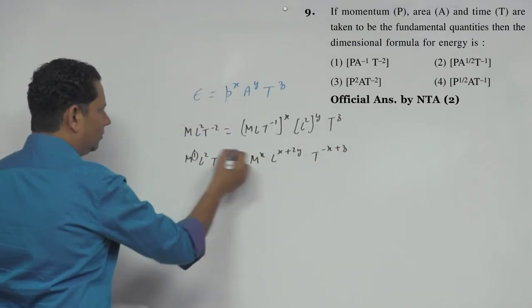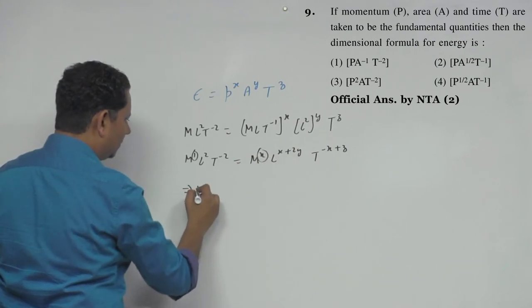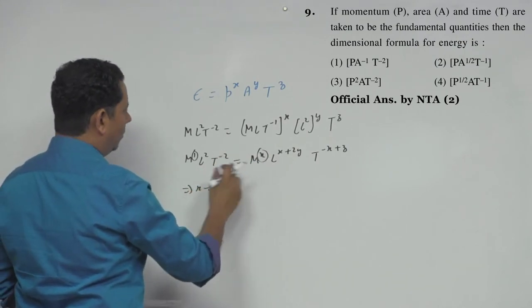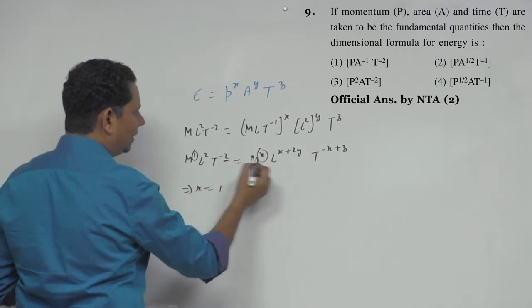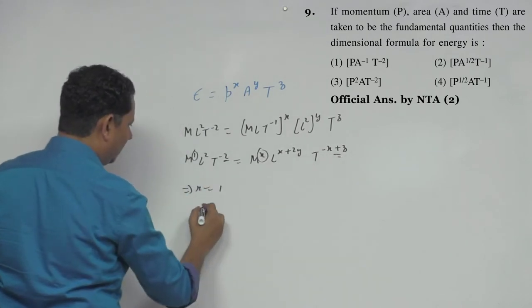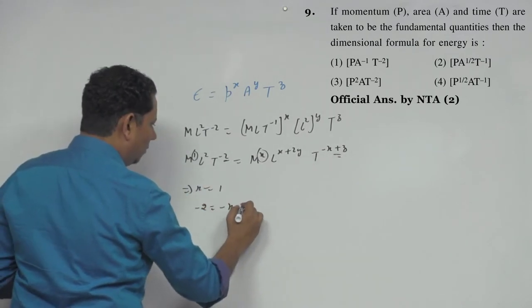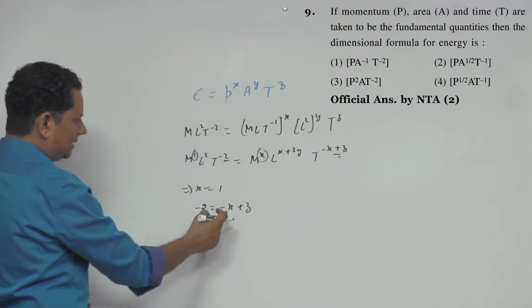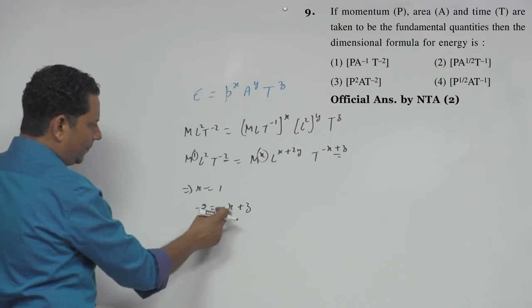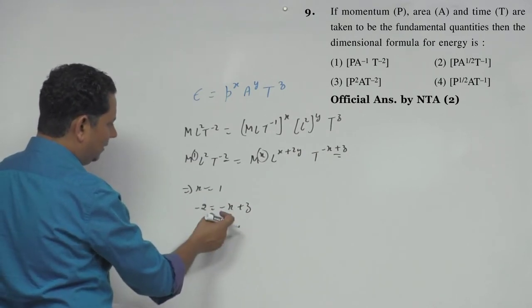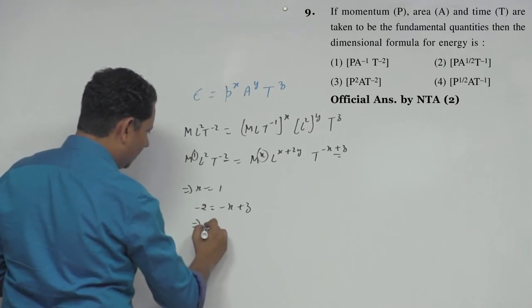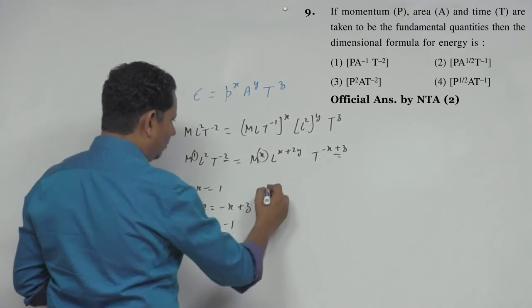When we equate these, this implies X equal to 1. First, let's equate the time terms: minus 2 would be equal to minus X plus Z. Now minus X value becomes minus 1, bringing it over gives plus 1, which implies Z is also equal to minus 1.